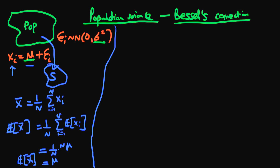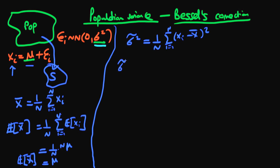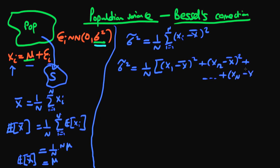So how do we go about estimating the population variance — the variance of the error term? On the back of what we did to form an estimator of the population mean, perhaps a sensible thing would be to form an estimator σ̃² equal to 1/n times the sum from i=1 to n of (x_i − x̄)². In other words, estimate the population variance using the sample variance. Expanding σ̃², we write it as 1/n times [(x_1 − x̄)² + (x_2 − x̄)² + … + (x_n − x̄)²].